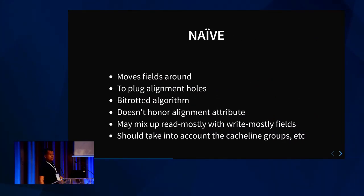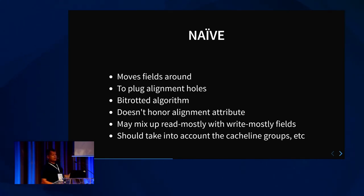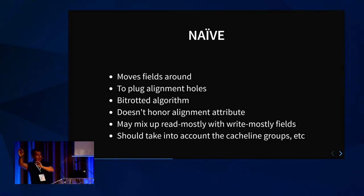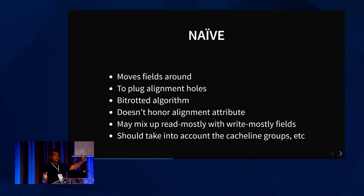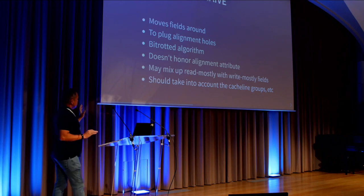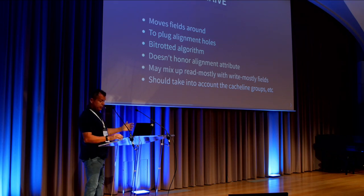But it is naive. It doesn't take into account lots of things discussed so far — it doesn't take cache line groups into account, whether fields in a cache line are related to each other. It just moves things around. It has to respect alignment attributes, it has to respect those cache line group metadata. When moving things together it should move a cache line group as a unit. You could combine different cache line groups if they are of the same nature.